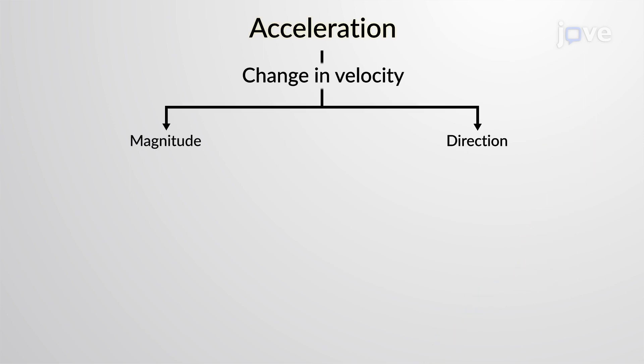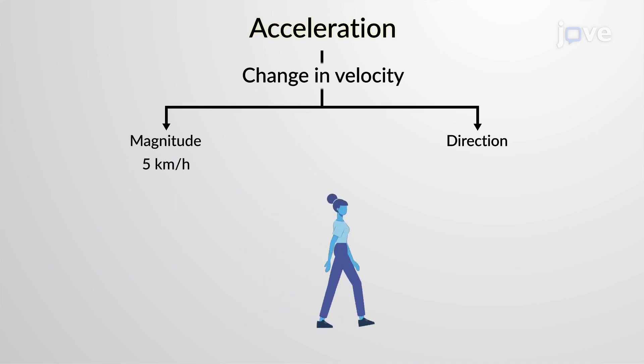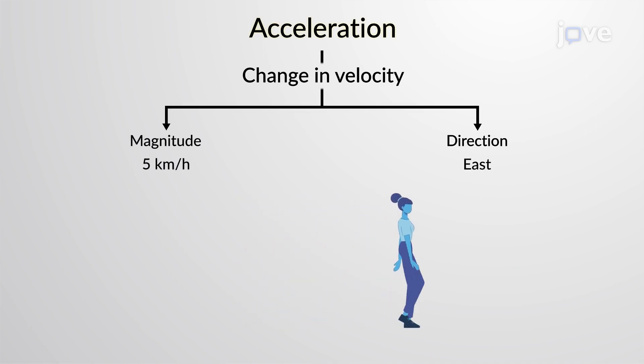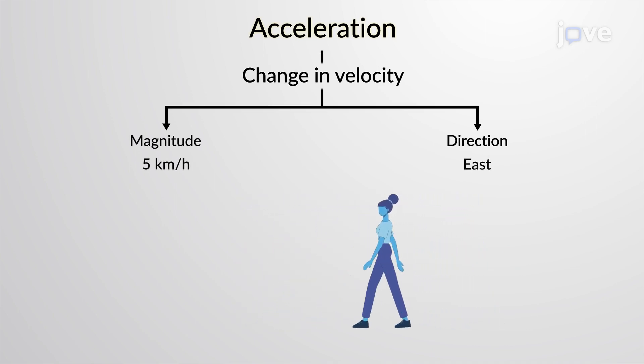For example, a woman is walking at 5 km per hour towards the east. She stops and returns, walking at 5 km per hour towards the east.